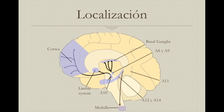When studying which parts of the brain synthesize dopamine, researchers originally found many nuclei producing catecholamines that were difficult to differentiate. They were named with the letter A followed by a number. Nuclei A1 to A7 are noradrenergic. For dopamine, we have nuclei A8 to A16. A8 and A9 are known as the nigrostriatal area, projecting to the basal ganglia. These are extremely relevant to motor control and are the nuclei damaged in Parkinson's disease.